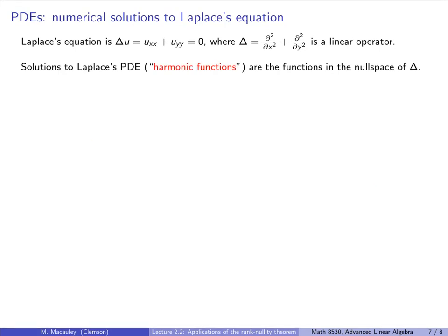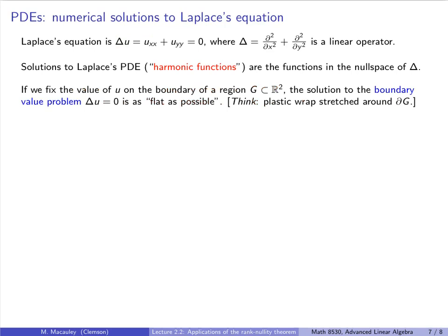Solutions to Laplace's PDE are called harmonic functions — they are in the null space of Laplace's operator. If we fix the value of U on the boundary of a region, the solution to this boundary value problem is the surface that satisfies the PDE and those boundary conditions: as flat as possible, like plastic wrap stretched around the boundary. This models steady state solutions to the heat equation. If you want to learn more, I cover the heat equation in both my ordinary differential equations class and my advanced engineering math class.